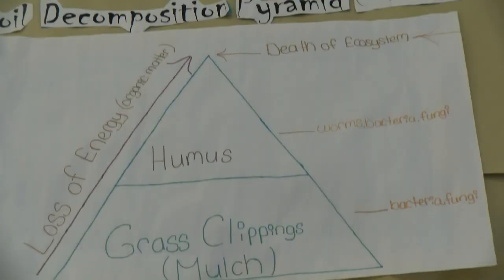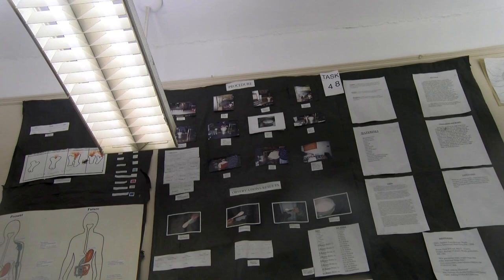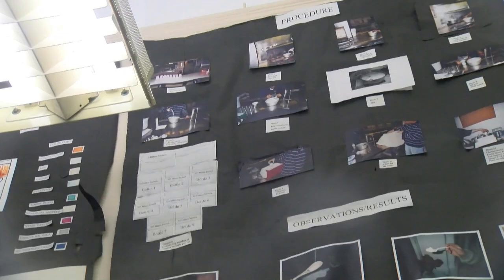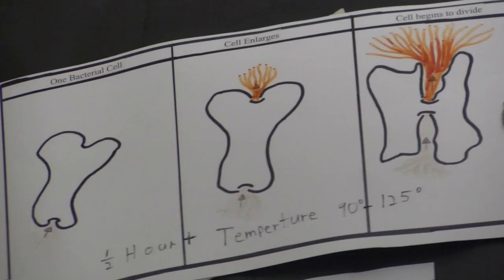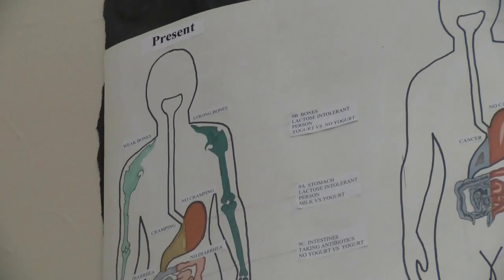The cycle illustration task is a detailed ecosystem diagram chart and a soil decomposition pyramid chart. Both tasks are related to each other and combined to make one task. Another experiment illustration task shows the operational process of making yogurt and how it can benefit the human body. The student photo illustration task shows the procedure, observations, and results. Basic drawing tasks also illustrate how yogurt reproduces over time and compare and contrast a person's health on eating and not eating yogurt.